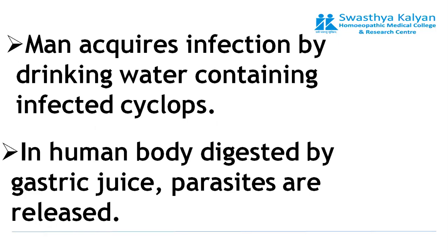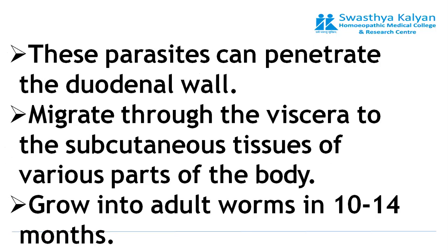Man acquires infection by drinking water containing infected cyclops. In the human body, the cyclops are digested by gastric juice and the parasites are released. These parasites enter the small intestine, then pierce the small intestinal wall and reach various parts of the body, usually the lower limb. The growth time required for development of an adult worm is around 10 to 14 months.